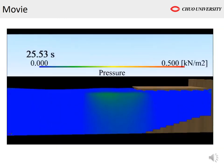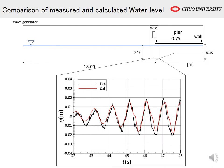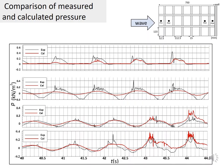Next, I will show you an animation of the pressure distribution by numerical calculation. It can be seen that the pressure is increased due to an influenced standing wave on the shore side. Next is a comparison of measured and calculated water level at WG1. The wave height is almost in agreement with the experimental value. This is a time series comparison of pressure. In the experimental value, PG3 and PG4, it can be seen that the pressure waveform is complicated due to the influence of a standing wave.